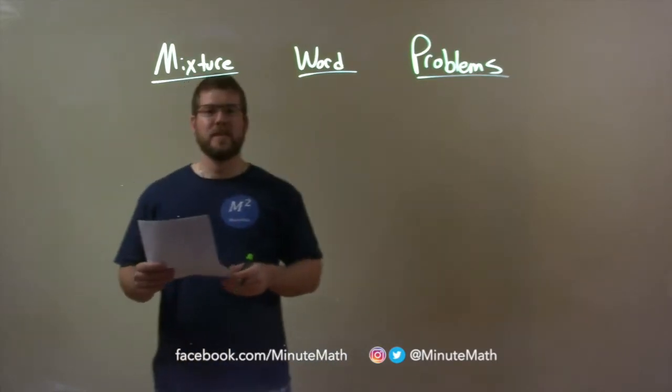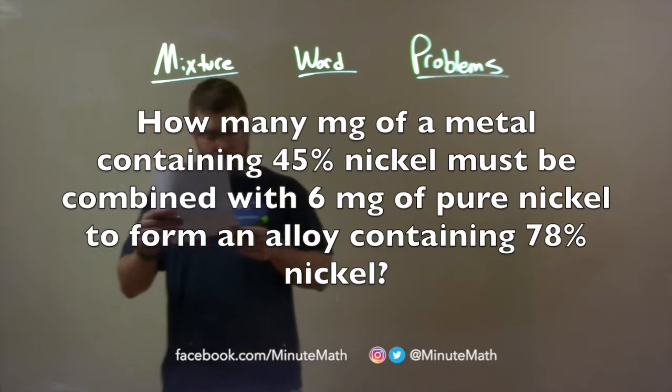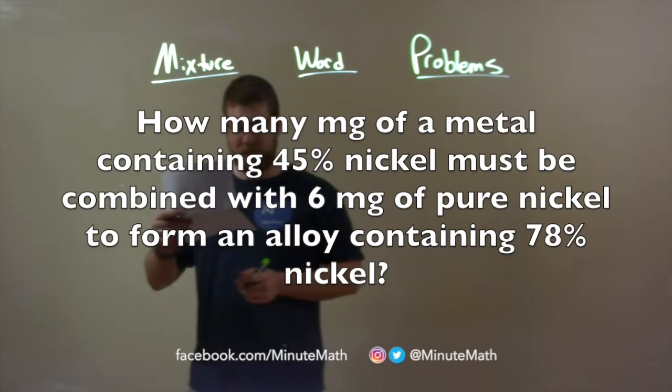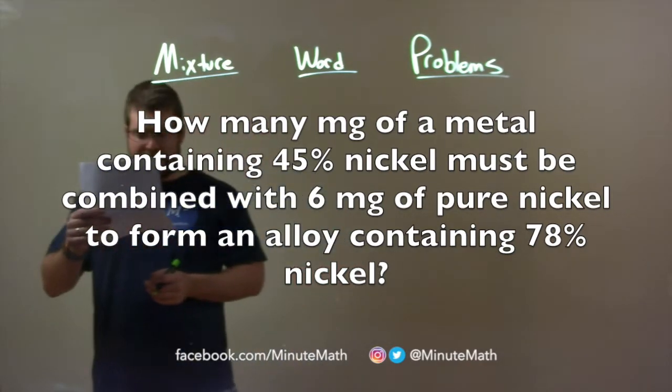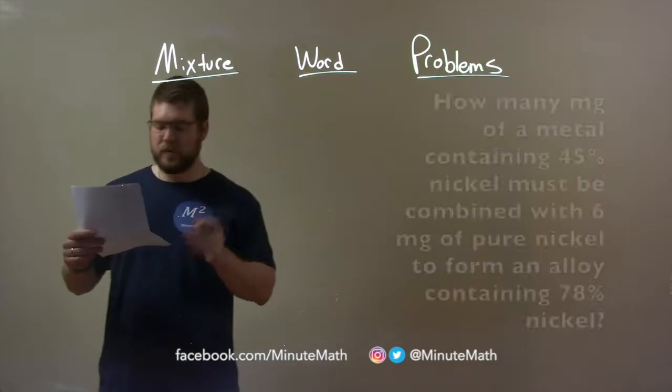If I was given this problem: how many milligrams of metal containing 45% nickel must be combined with 6 milligrams of pure nickel to form an alloy containing 78% nickel?